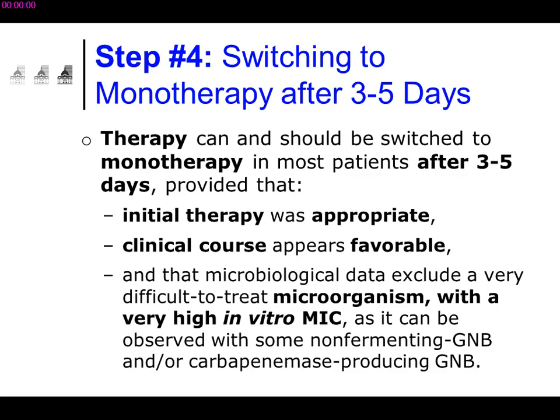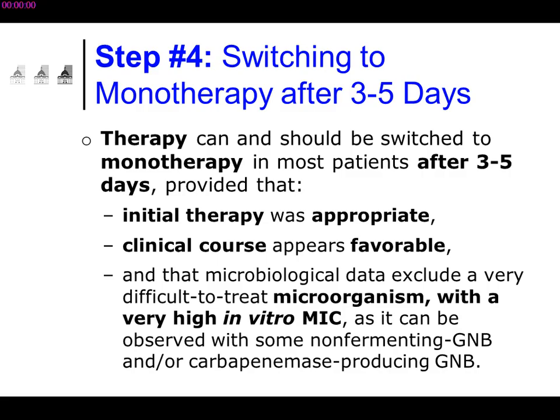The only exception is neutropenic patients with very severe neutropenia. Apart from those, the data agree that you can stop aminoglycosides or fluoroquinolones used initially. Our German colleagues published a randomized trial comparing moxifloxacin plus meropenem versus meropenem alone in patients with severe sepsis or septic shock — which is not small.